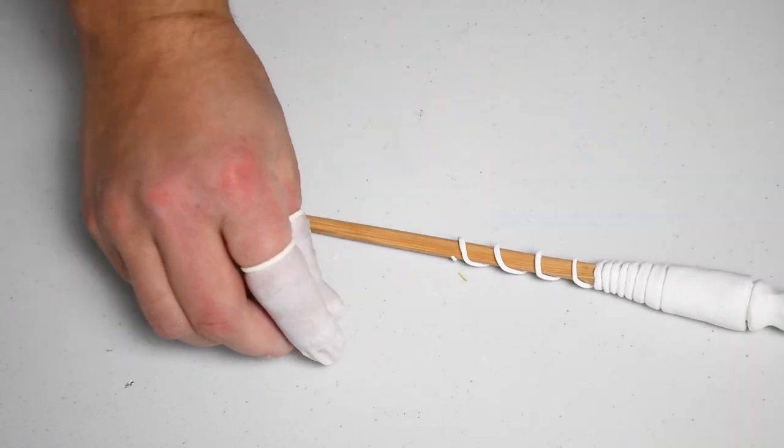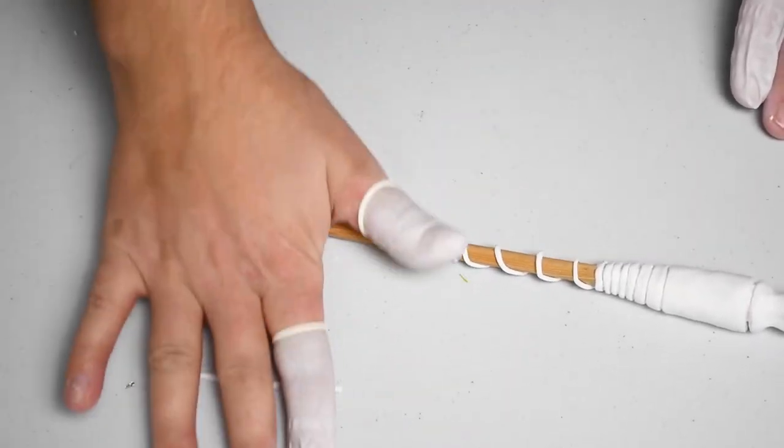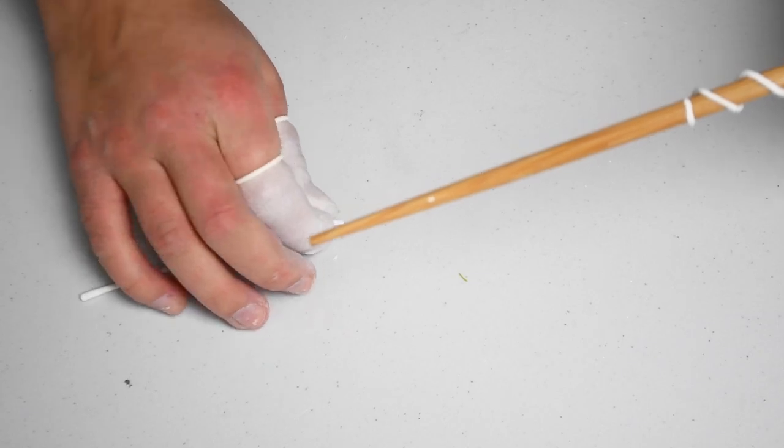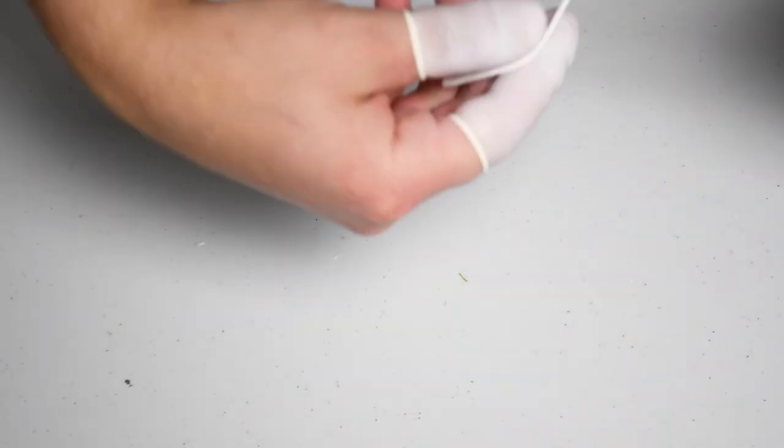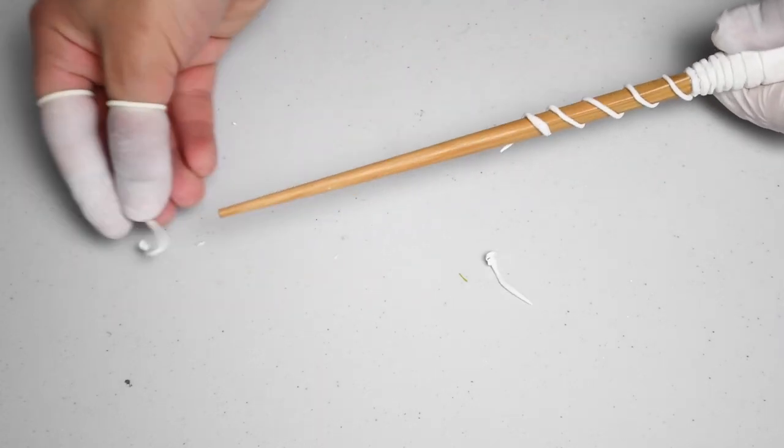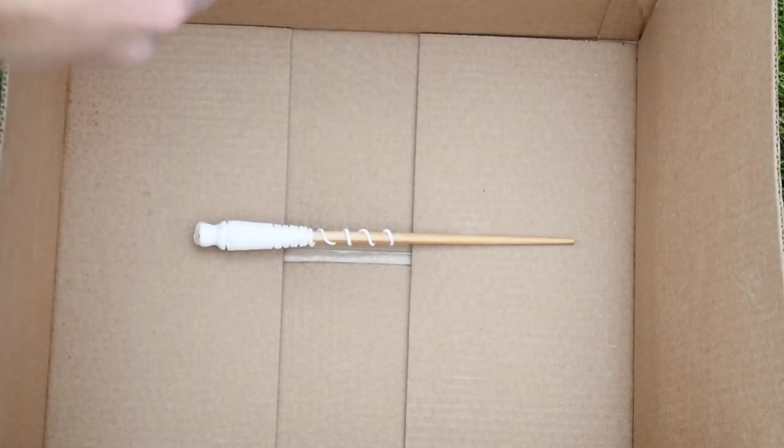So one of the parts I wasn't able to show because once again my SD card is being funky and it didn't record was the top portion of the wand by the jewel. It is a little bit more elevated and cinched in. So essentially you just take your fingers and press it inwards and make that kind of elevated point.